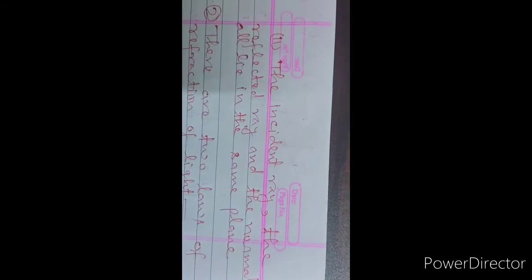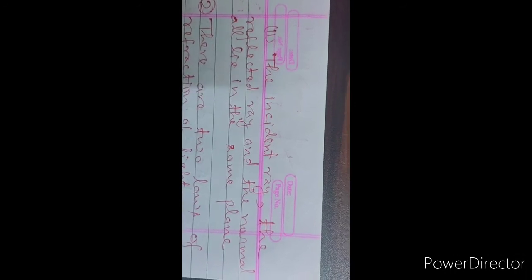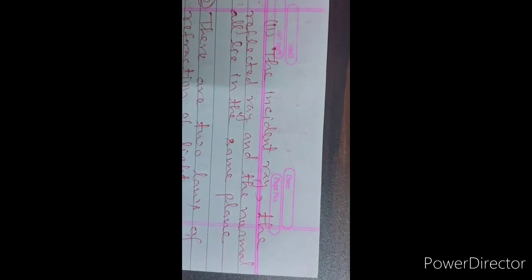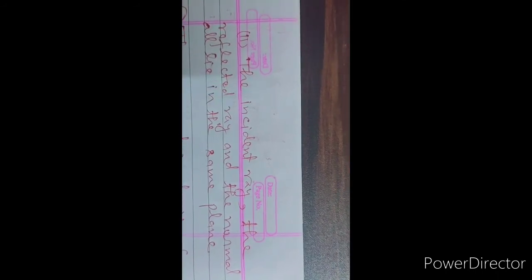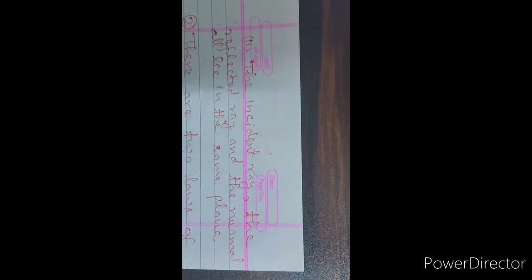For example, the first law of reflection: the incident ray, the reflected ray, and the normal all lie in the same plane. This means that when the reflection process occurs, the incident ray, the normal ray, and the reflected ray are all in one plane.